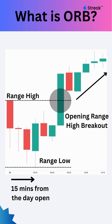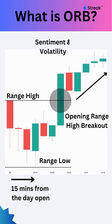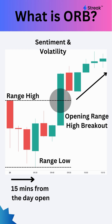The opening range is determined by the high and low of a specified time period, such as 15 minutes, 30 minutes, or 1 hour. The idea behind this strategy is that the opening range reflects the sentiment and volatility of the market, and that a breakout from the range indicates a potential trend continuation or reversal.